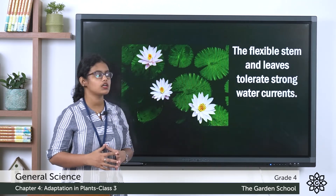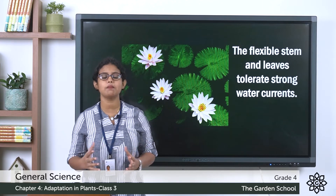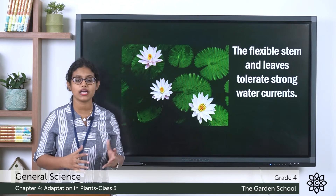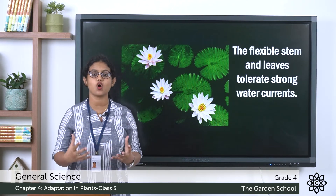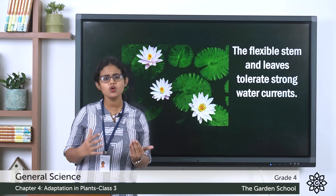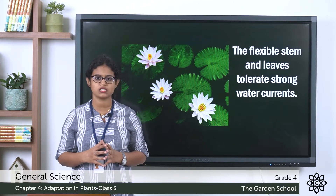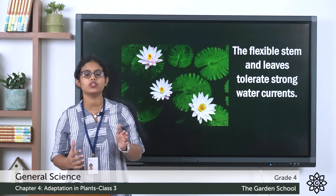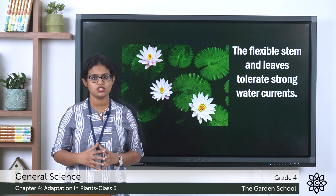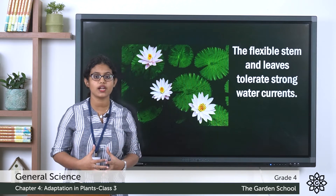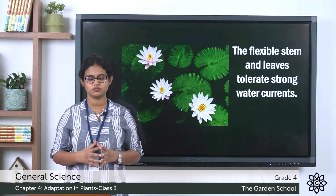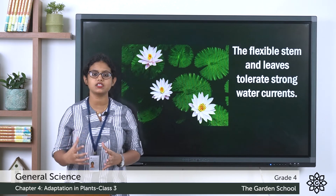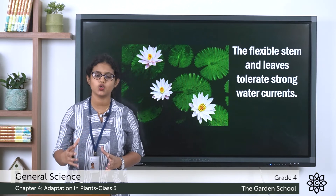The next feature is that aquatic plants have flexible stems and leaves. They have flexible stems and leaves in order to tolerate strong water currents — since the stems and leaves are flexible, they can easily bend with the flow of water. Additionally, the leaves take in air and send it to all parts of the plant, including the roots.